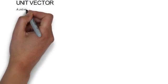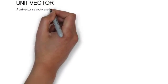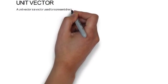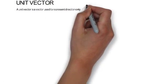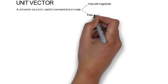What is a unit vector? A unit vector is a vector used to represent direction only. It has unit magnitude. It has no dimension. Thus it represents only a direction.